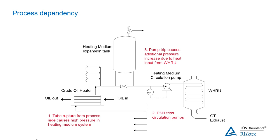Process dependency should not be mistaken for double jeopardy. Process dependency is where there is an inevitable knock-on effect from an initiating scenario. With respect to consequences, dependency would be an immediate consequence leading directly to a second consequence. The second consequence could be dealt with as an escalated event, but only if there were separate safeguards to prevent it — in this case, for example, a second pressure relief valve set at a higher pressure.